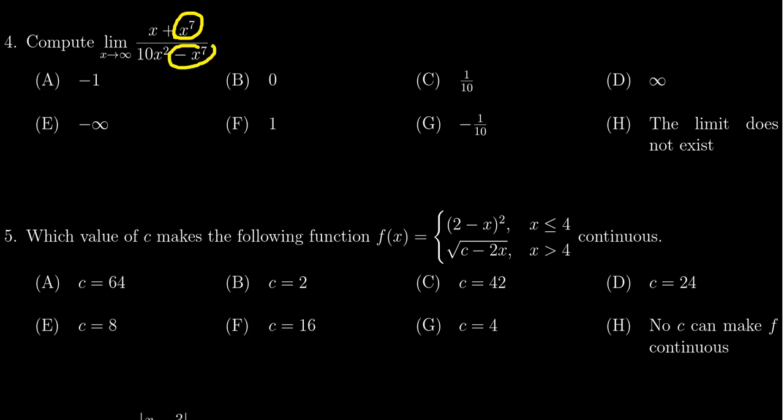We get x to the 7th on the top and negative x to the 7th on the bottom, so the limit as x approaches infinity here will be identical to just taking x to the 7th over negative x to the 7th. We only need the leading terms, those are the most dominant in terms of growth as x goes towards infinity.